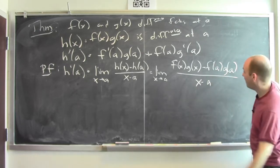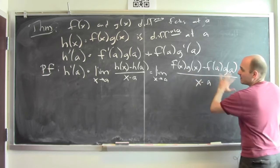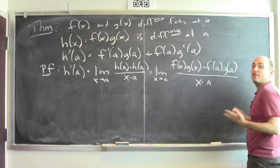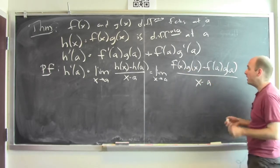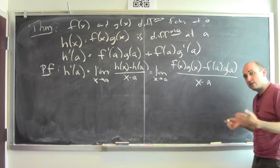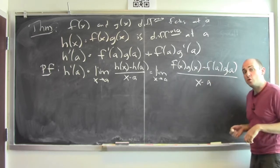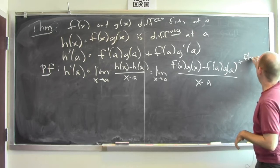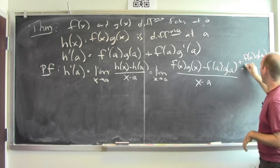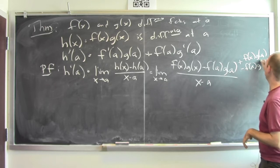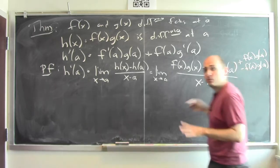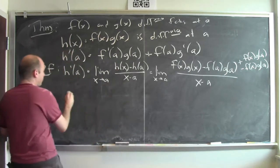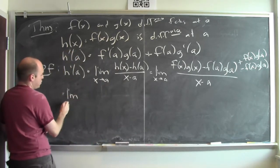There's a little trick. I want to somehow end up getting things that involve the derivatives of f and g. Right here I can't split these apart, so I'm going to add and subtract something that will let me factor the numerator. I'm going to add f of x times g of a, and then subtract f of x times g of a. I'm adding and subtracting the same thing, so I haven't actually changed anything, but that'll let me rearrange the numerator.